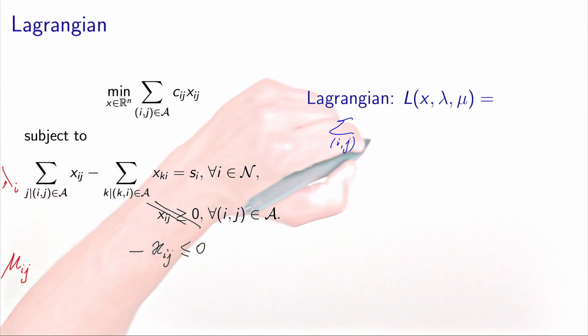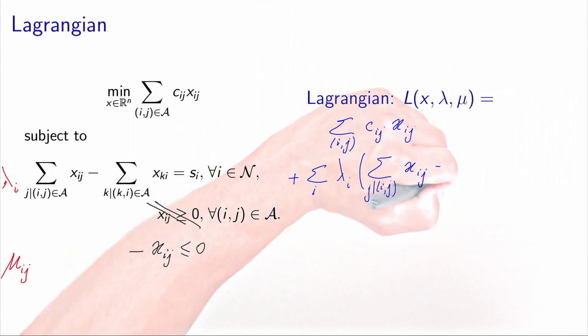Now we can write the Lagrangian. It is first the objective function, then a linear combination of the equality constraints. This is the Lagrangian of the problem.